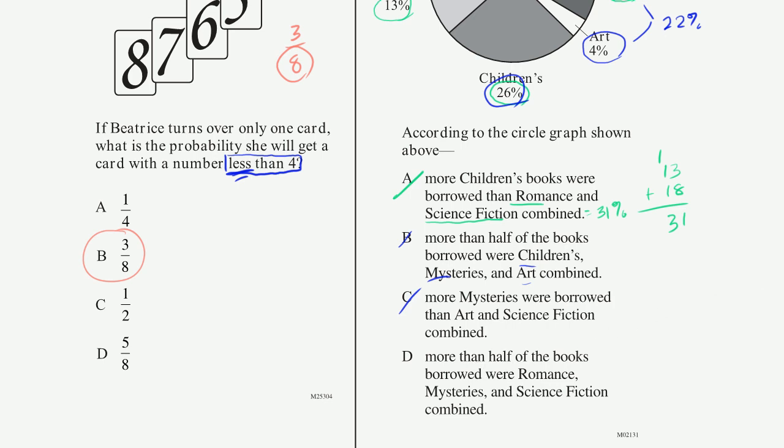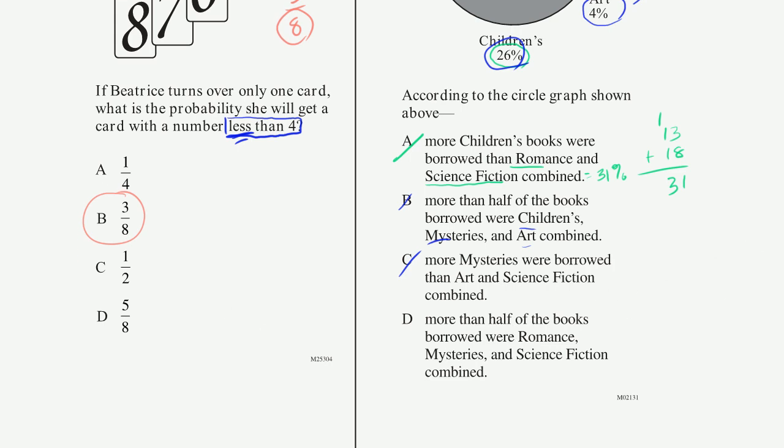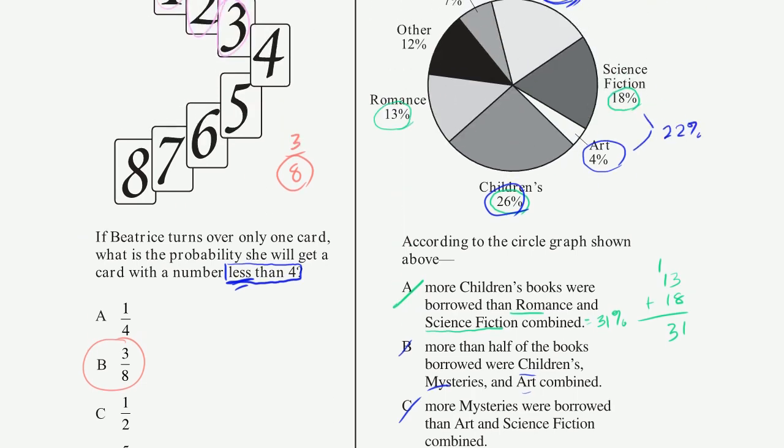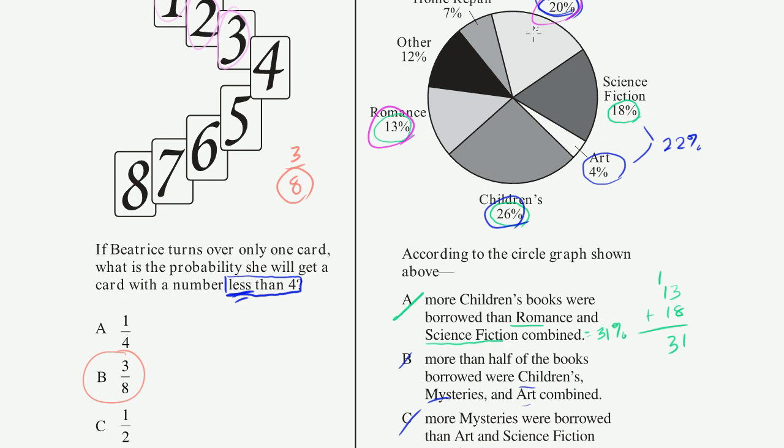And then finally, more than half of the books, this is probably going to be our answer if we haven't made any silly mistakes. This says more than half of the books borrowed were romance, mysteries, and science fiction combined. Let's see that. Romance, mysteries, and science fiction. So we already know romance plus science fiction. That was 13 plus 18, which we already figured out was 31%. These two combined are 31%. And then you add that 31% to the mysteries. So it becomes 51%.